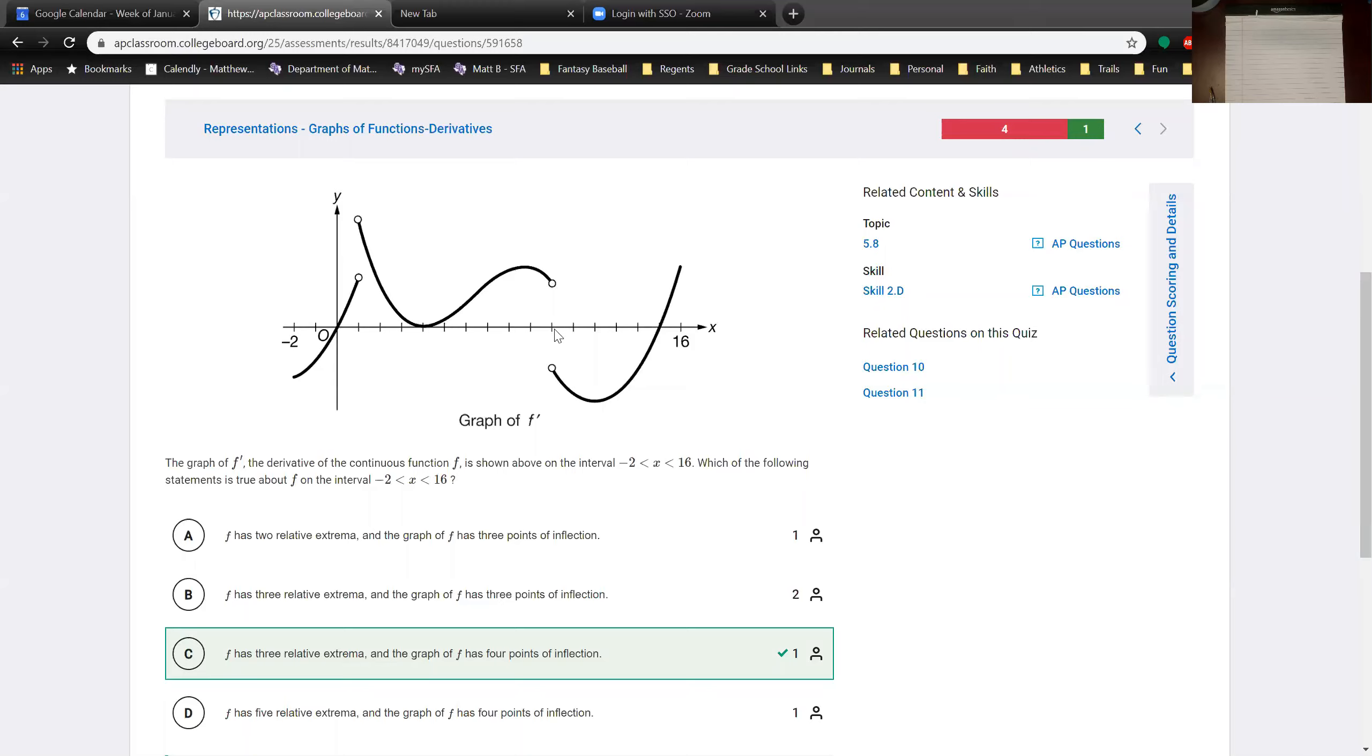Here's another extreme value right here and it goes from increasing to decreasing so by the first derivative test that's an extreme value. And then we have at this location the f prime equals zero and it goes from decreasing to increasing, or in other words f prime goes from negative to positive so that's an extreme value.